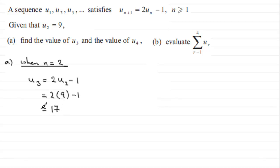To get the next term, the fourth term u₄, we just need to let n equal 3. So when n equals 3, we've got u₃ add 1, u₄, in other words the fourth term in the sequence is equal to 2u₃, 2u₃ minus 1. We know what the third term is, it's 17, so you've got 2 times 17 minus 1, 2 times 17 is 34, take away 1 is 33.